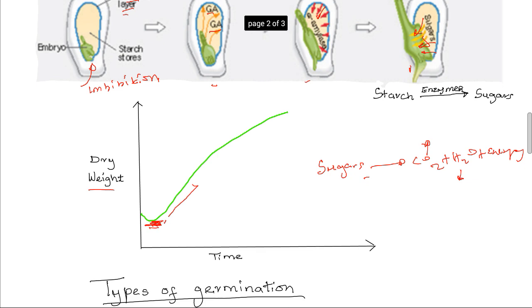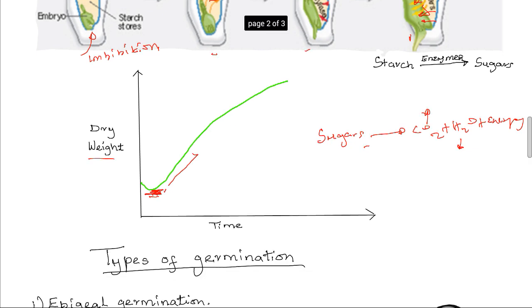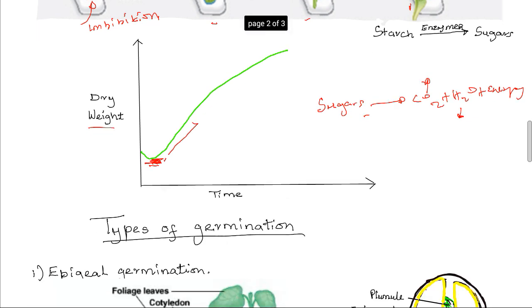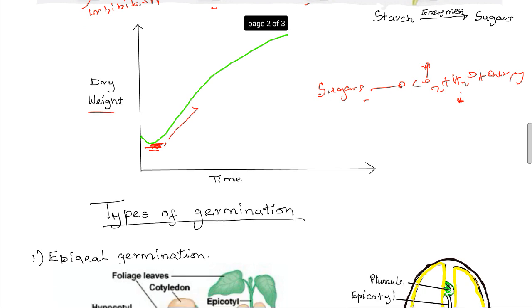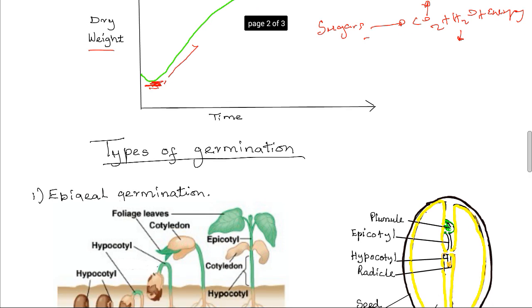There are two types of germination in plants, and this depends on whether the cotyledons are brought above the ground or remain below it.